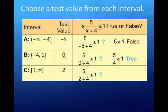And now I'm going to plug in 2, and I get 5 over 6, and five-sixths is not greater than or equal to 1. And so that last interval is going to be false.